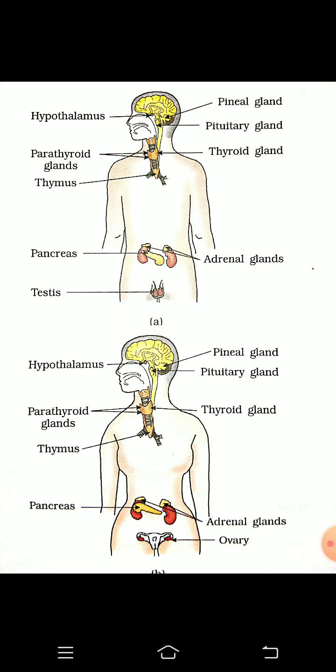What are the advantages? The advantage is that it can reach all the cells of the body, unlike the nervous system which cannot reach all the cells. In the endocrine system, information can reach all the cells and it is also a continuous process. In the nervous system, we learned that it gives a sudden or immediate response to a stimulus, but here in the endocrine system there is a slow transmission of information.